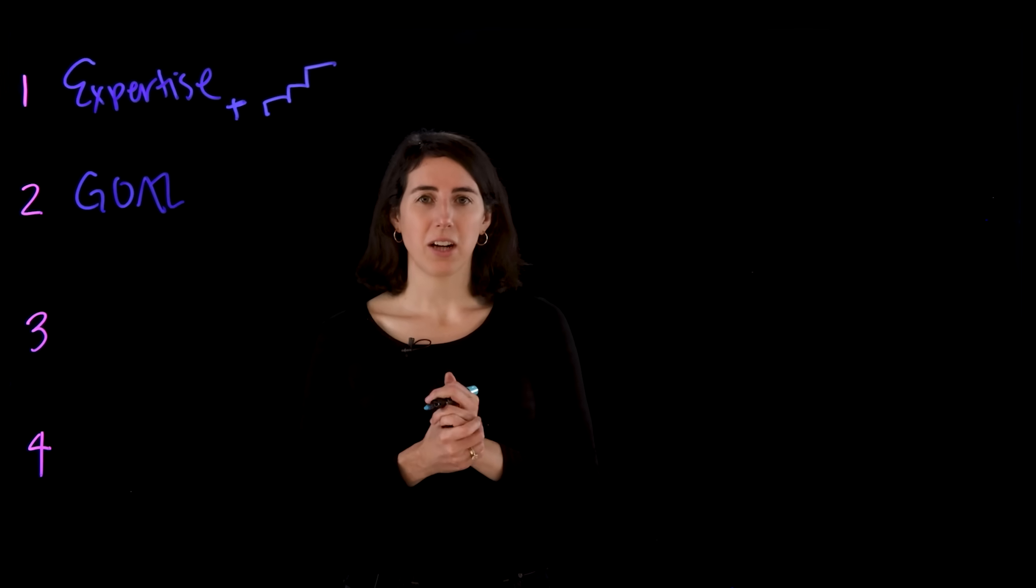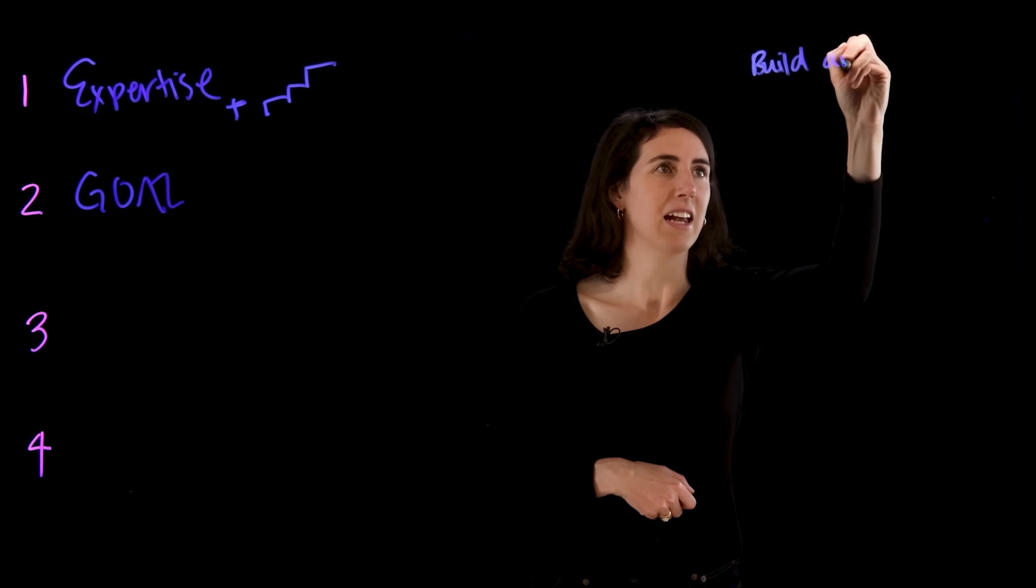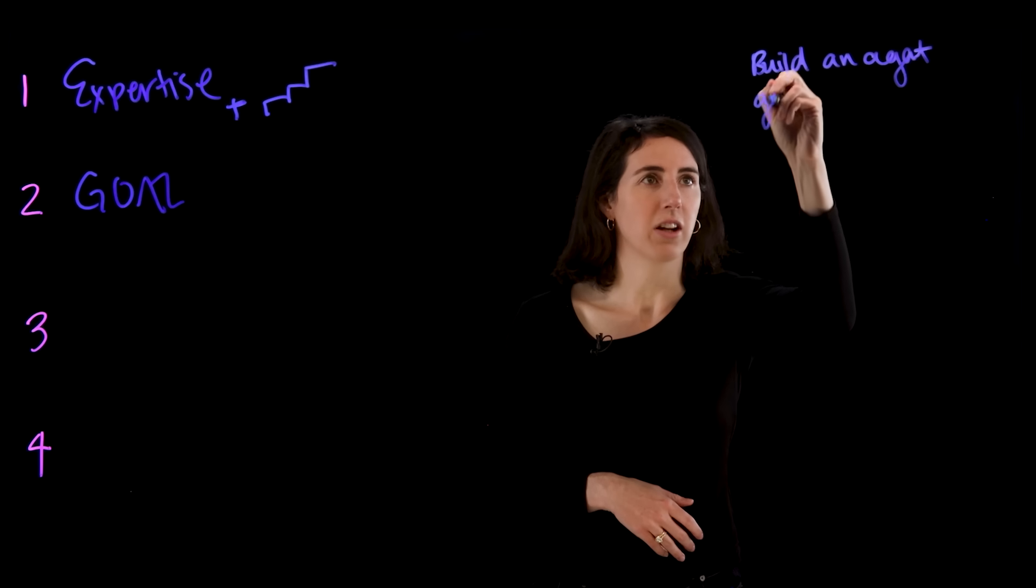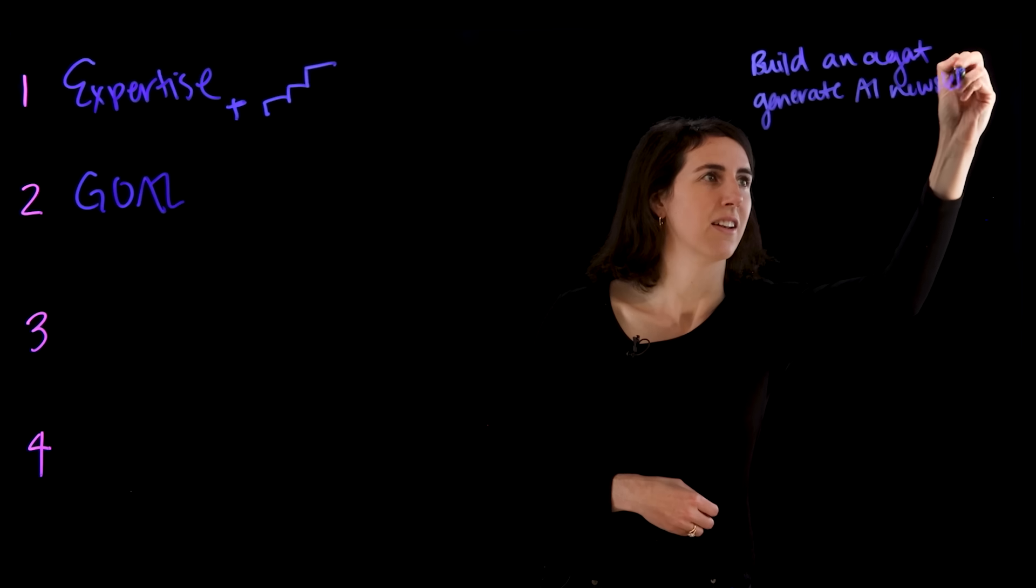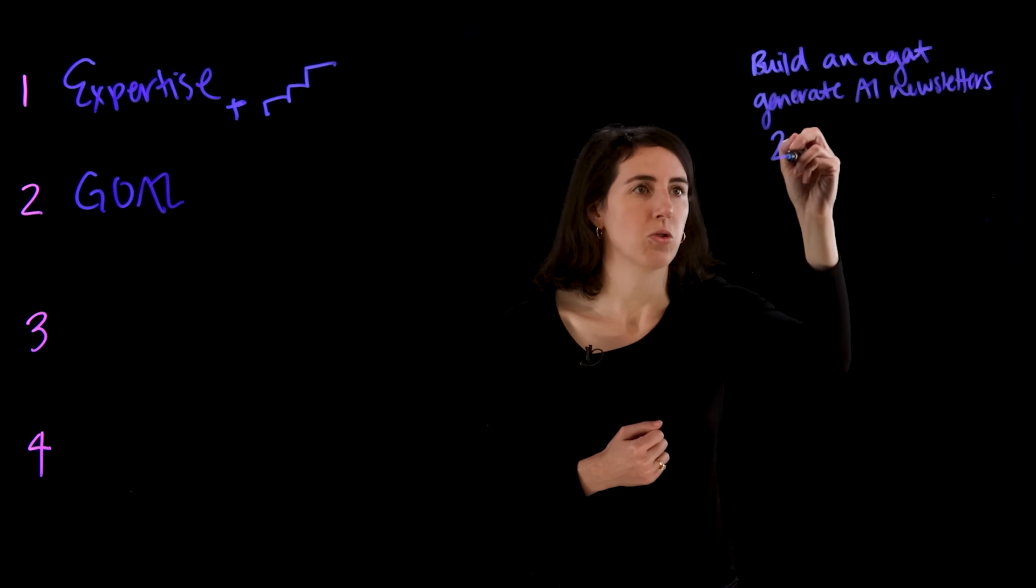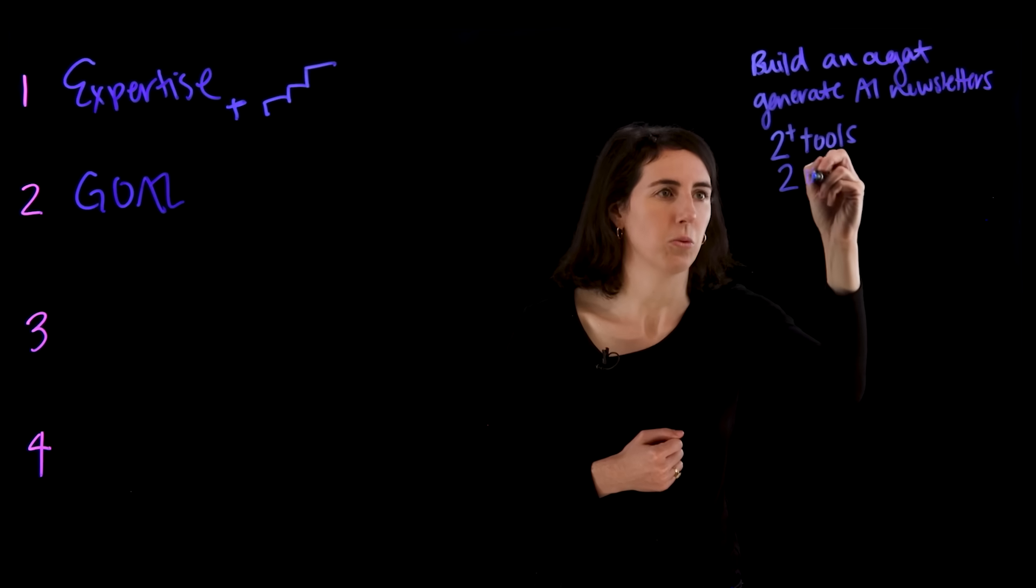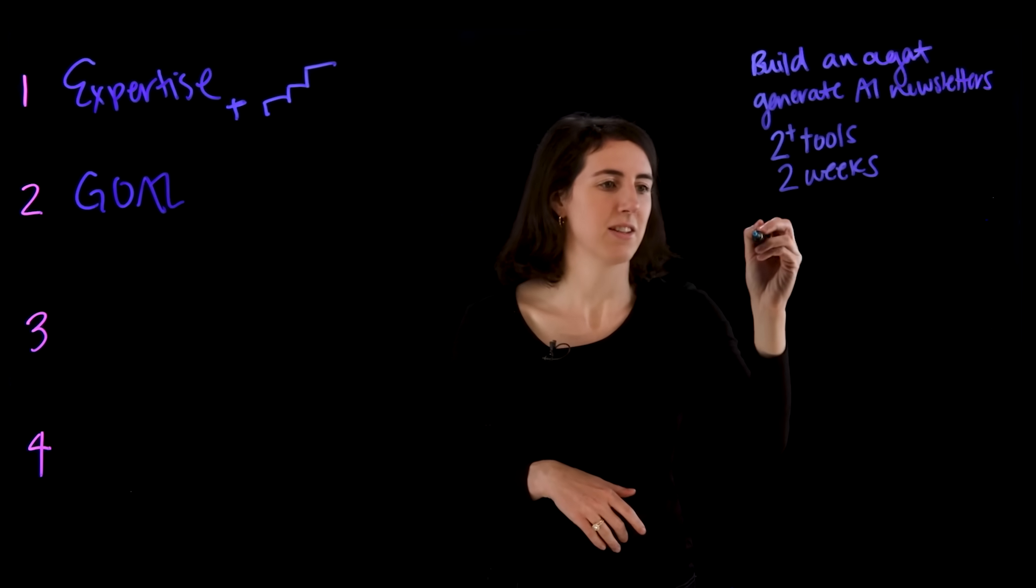Let's say we want to develop an agent and test new agentic AI frameworks. We could create a very specific goal that says build an agent and we want this agent to generate AI newsletters and we want to do that using two tools. We're going to call two tools and we're going to do that in two weeks. Now we've created a goal that is SMART.